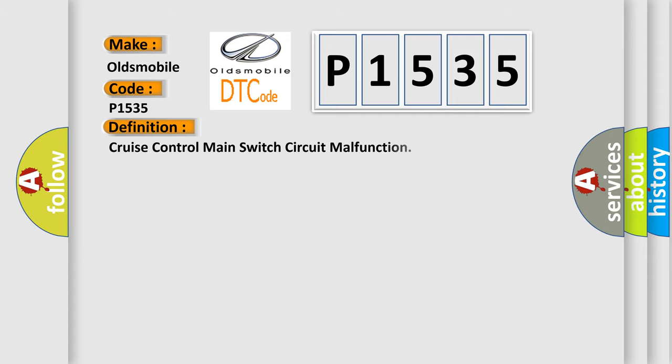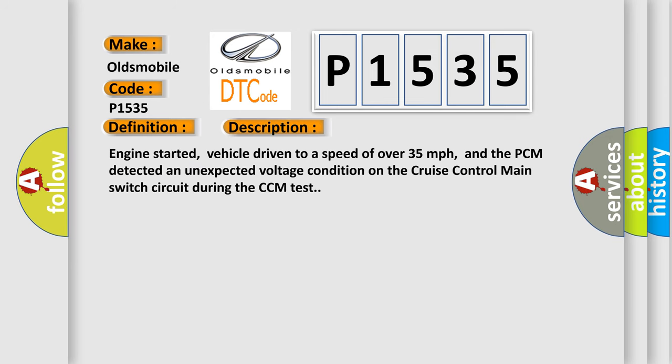The basic definition is Cruise control main switch circuit malfunction. And now this is a short description of this DTC code. Engine started, vehicle driven to a speed of over 35 miles per hour, and the PCM detected an unexpected voltage condition on the cruise control main switch circuit during the CCM test.